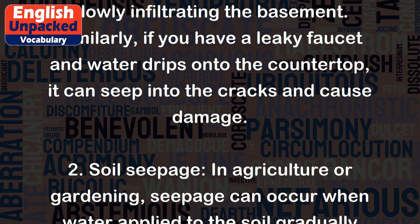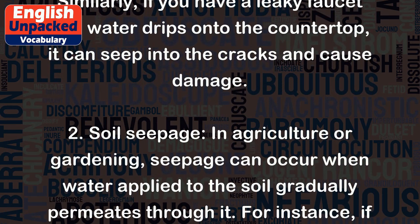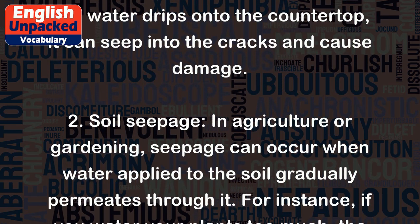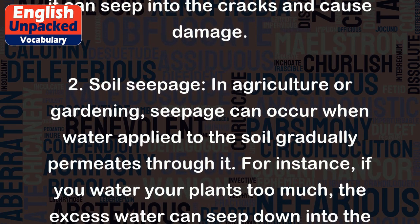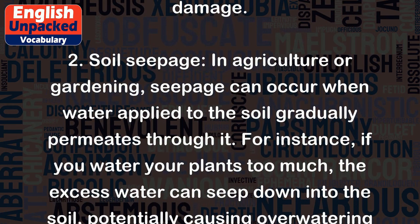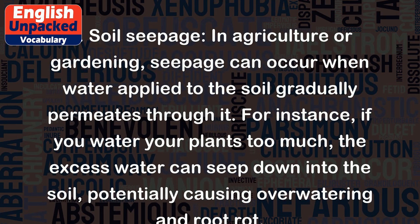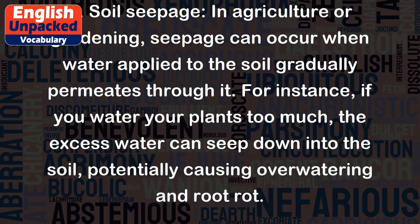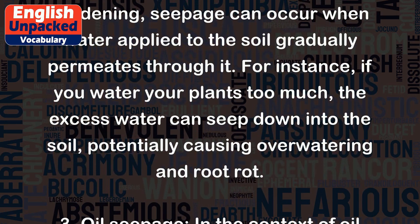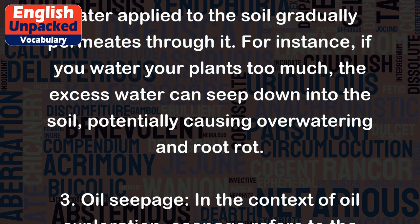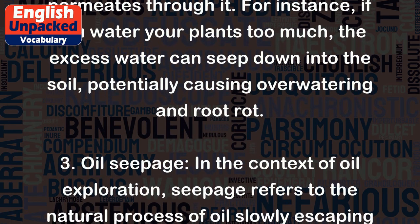2. Soil seepage: In agriculture or gardening, seepage can occur when water applied to the soil gradually permeates through it. For instance, if you water your plants too much, the excess water can seep down into the soil, potentially causing overwatering and root rot.